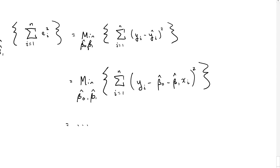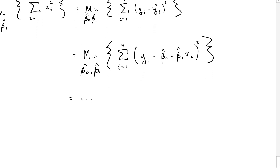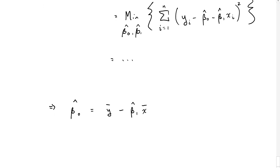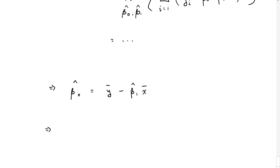I'm going to skip the next few steps because the way that you minimize something is you use calculus — you would use some calculus to find the optimal beta 0 and beta 1. If you go to grad school you can learn all about that. You're going to end up finding that beta 0 hat can be defined as the average of y minus the estimated beta 1 hat times the average of x.